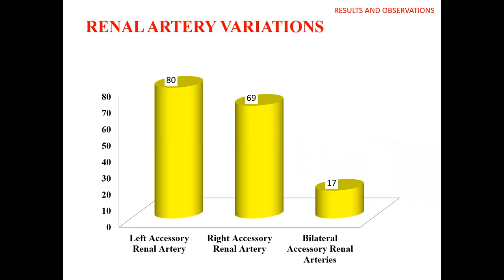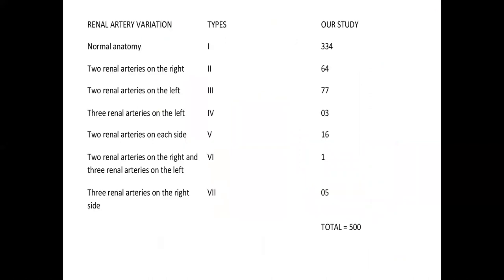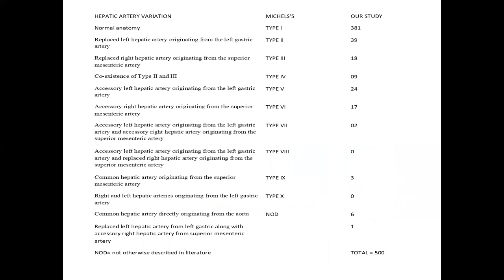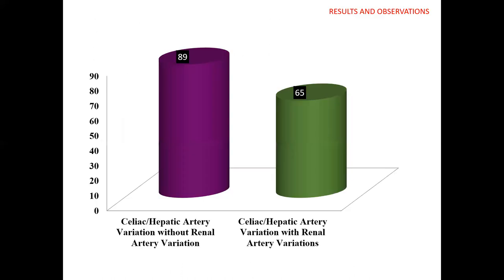For renal artery variation, left accessory renal artery was seen most commonly in 80 cases, and 331 patients had normal renal artery anatomy, followed by two renal arteries on the right and then on the left. For hepatic artery variance, 39 cases showed a replaced left hepatic artery originating from the left gastric artery, followed by accessory left hepatic artery from the left gastric artery, then replaced right hepatic artery originating from the SMA. Using Michaels' classification, 381 cases had normal hepatic artery anatomy. Celiac or hepatic artery variation without renal artery variation was seen in 89 cases, and celiac or hepatic artery variation with renal artery variation was seen in 65 cases.